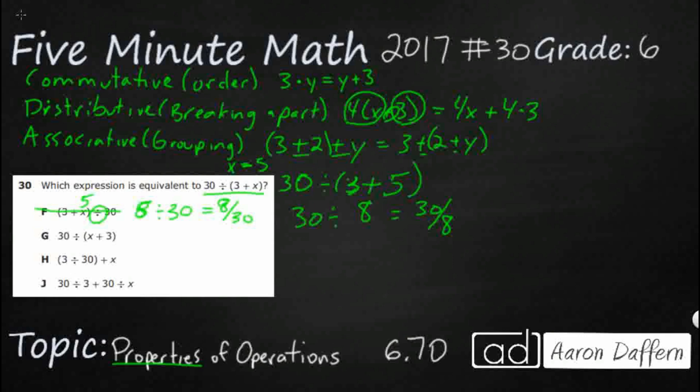So, we've got 30 divided by, and then we've got a 5 right there. So, this is 30 divided by 8. So, that looks like 30 over 8, which is exactly what we said right here.